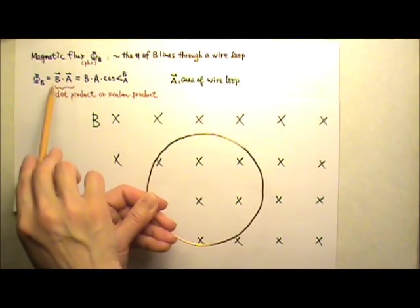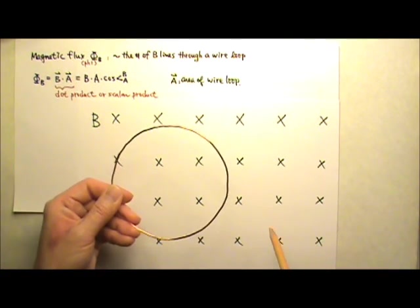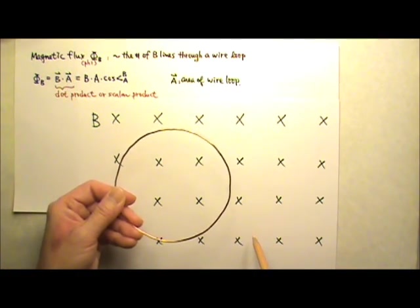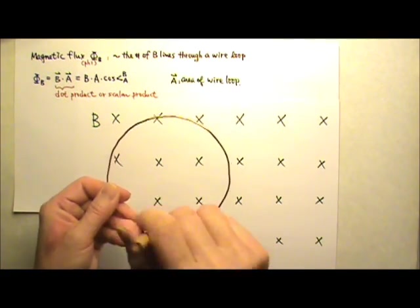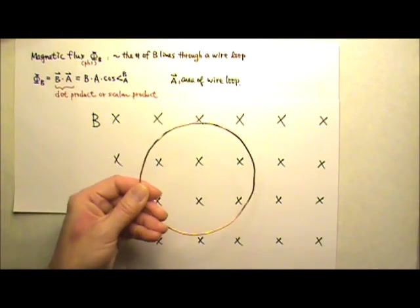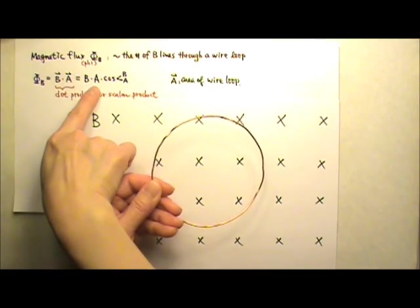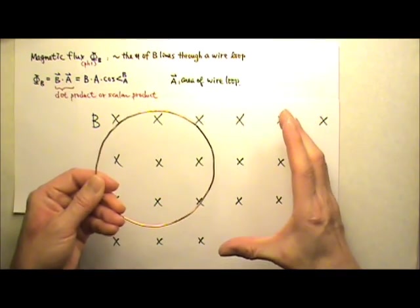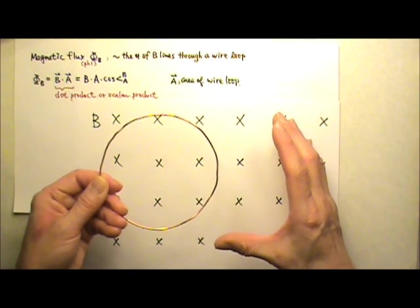Since flux is B dot A, the stronger the field, the denser the field lines, and therefore the more lines will go through the loop, which leads to larger flux. And the larger the area of the loop, the more lines going through the loop, and therefore the larger the flux is.